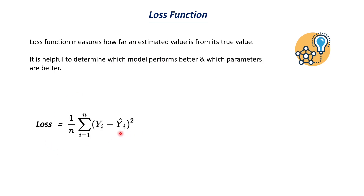The formula for loss function is: sum of (yi minus ŷi) squared, divided by n — this is called Mean Squared Error (MSE). Here yi is the true value and ŷi is the estimated (predicted) value. We find the difference between these two values for all data points, square each difference, sum them all up, and divide by n (the total number of data points). For example, if we have 100 data points, each predicted value will have some error, and we sum all those squared errors and divide by 100.